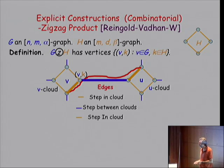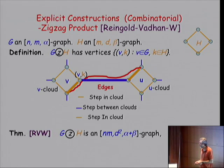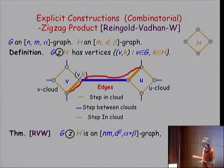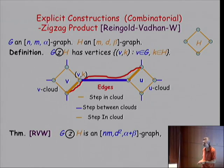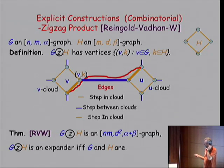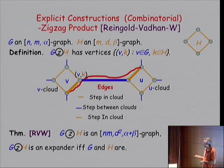It's a very simple construction. What's pretty amazing is what it gives you: if the two graphs are expanders, then the new one is also an expander. The new graph has N times M vertices, the degree is d squared, and if we have bounds alpha and beta on lambda of G and H respectively, we get a bound of alpha plus beta. The remarkable thing is that the degree of the ZigZag product depends only on the degree of the small graph — so even if the degree of the big graph was large, it shows no sign here. It's a way to significantly reduce the degree of the big graph while remaining expanding.